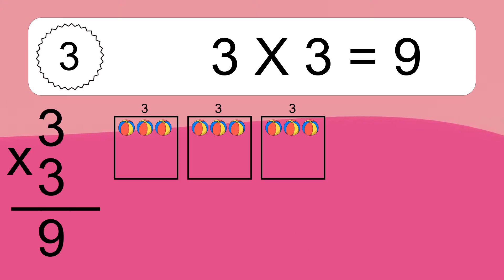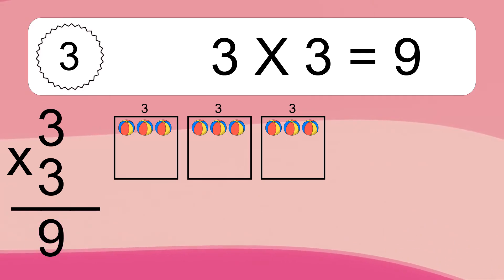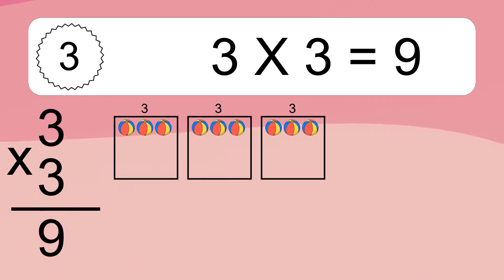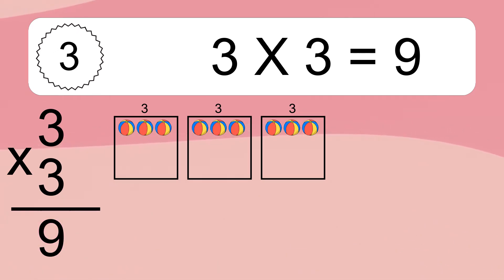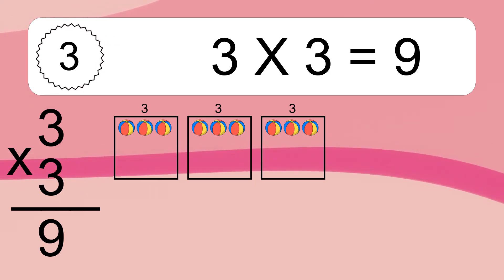3 times 3 equals what? We have 3 boxes and each box has 3 colorful balls inside. If you count all the balls in all the boxes together, you will have 3 times 3 balls.